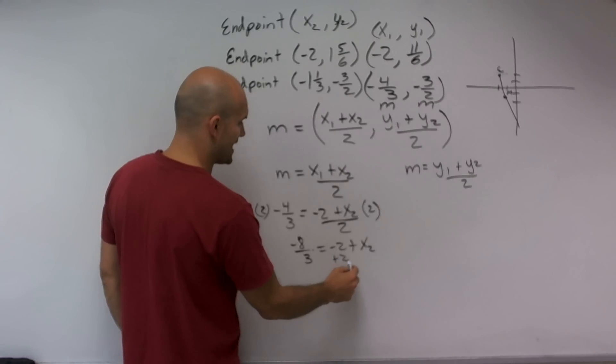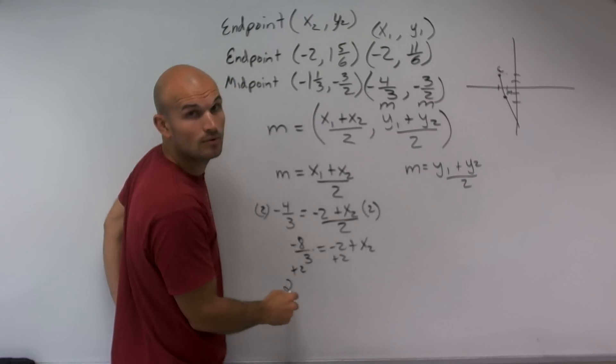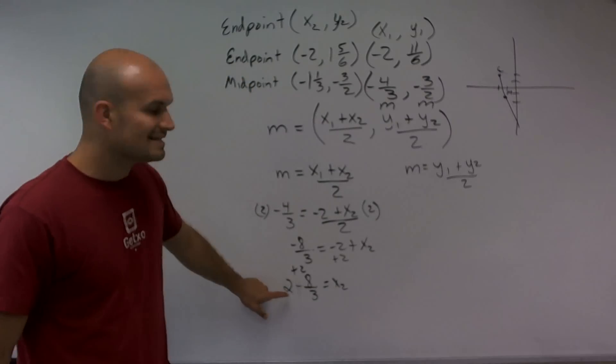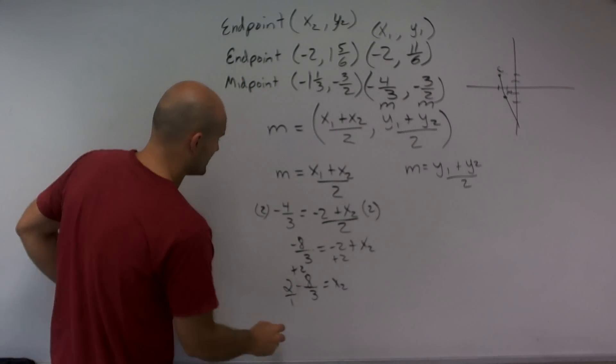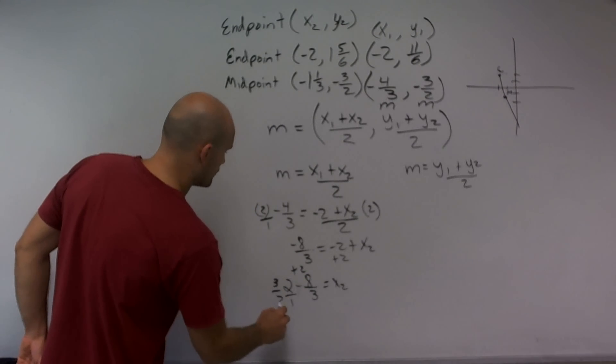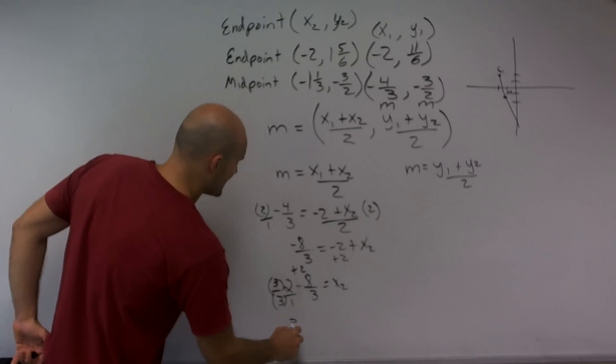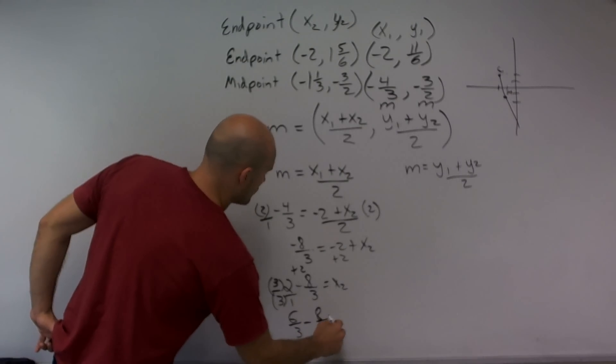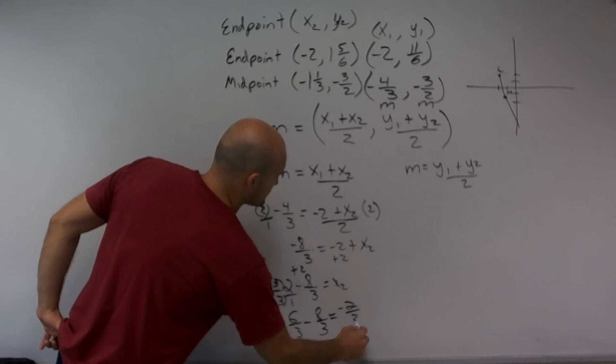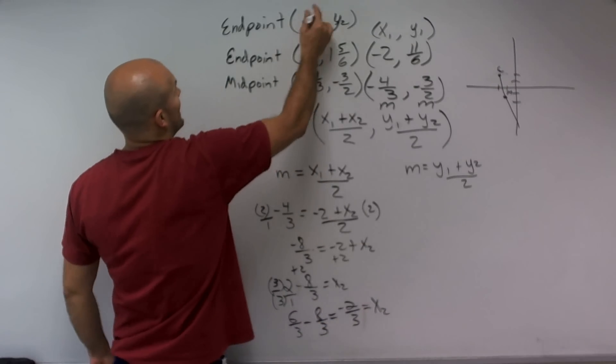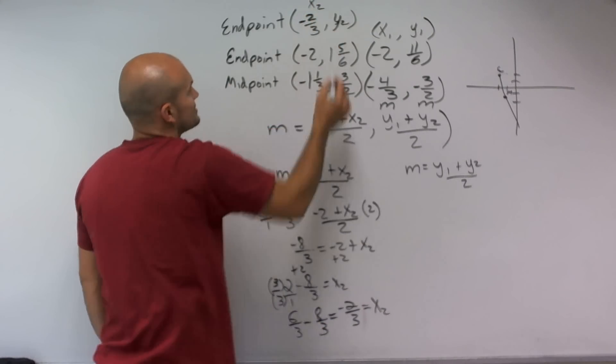Now the next thing I need to do is get rid of this negative 2. So I'm going to add a 2 to both sides. So what I have is 2 minus 8/3 equals x2. I need to get these to be the same denominator. You can put the 2 over 1, but to get these to be the same denominator, I need to multiply by 3/3. So in doing that, I get 6/3 minus 8/3, which equals negative 2/3, which is the value of x2.